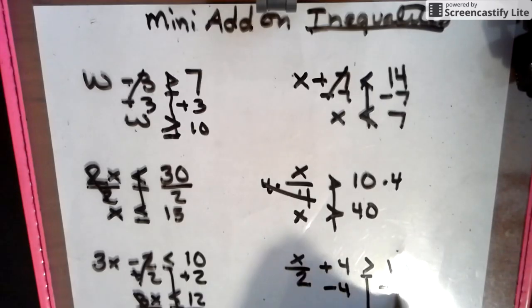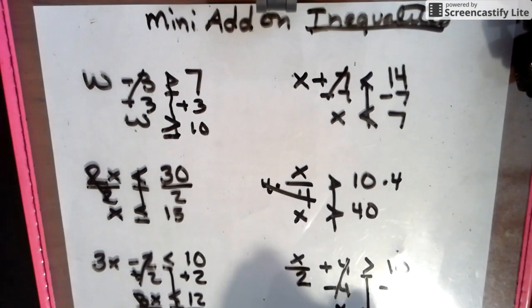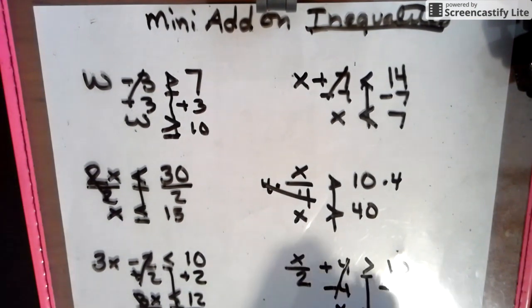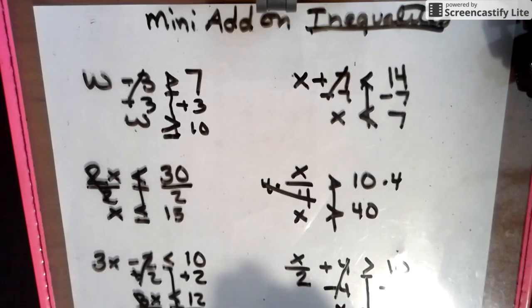Subtract 4, subtract 4, keeping it balanced. All numbers greater than or equal to — remember, that's division. So x is greater than or equal to 12. All numbers bigger than or equal to 12, so 12, 13, 14, all the way to infinity.